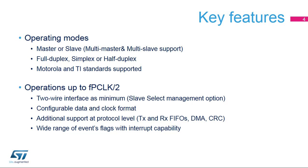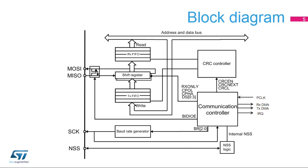At the protocol level, the user can use specific data buffers with an optional automatic cyclic redundancy check, or CRC calculation, and transfer data through the direct memory access, or DMA. There are a wide range of SPI events that can generate interrupt requests. The simplified SPI block diagram shows its basic control mechanisms and functions. There are four I/O signals associated with the SPI peripheral. All of the data passes through receive and transmit buffers via their specific interfaces.